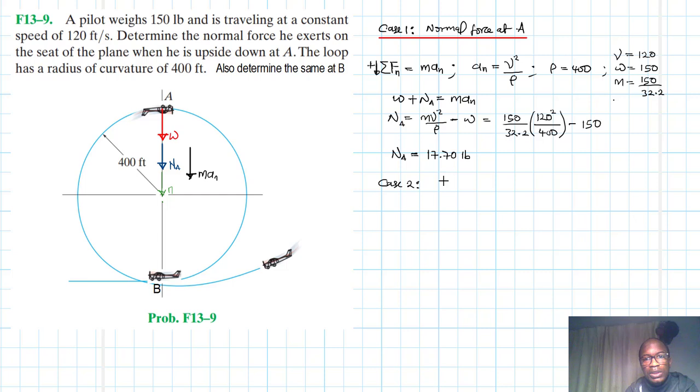We're repeating the same process only that this time around the aircraft is at B. We are looking for the normal force that the pilot exerts on the seat while the plane is at B.